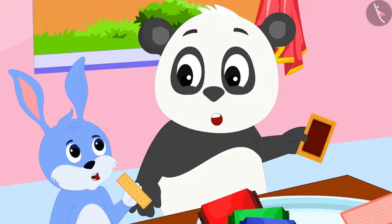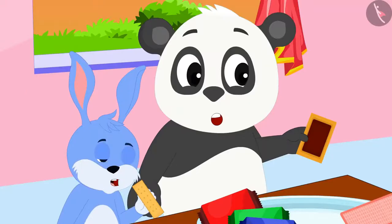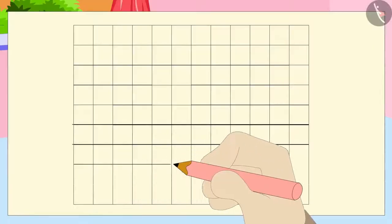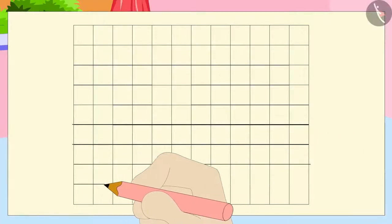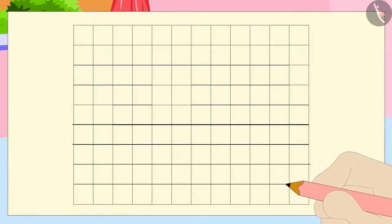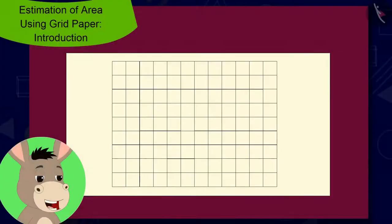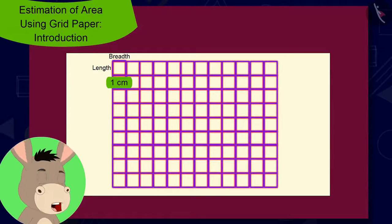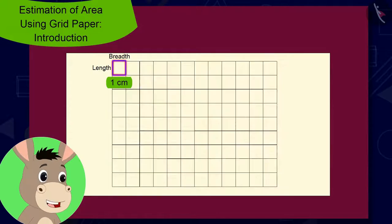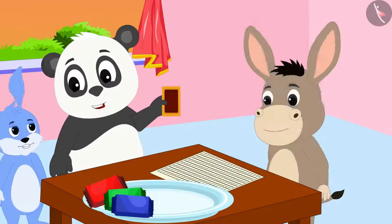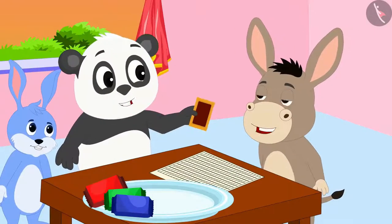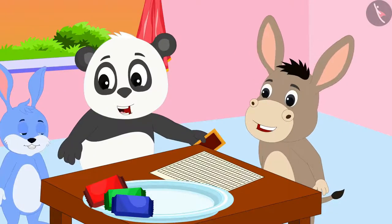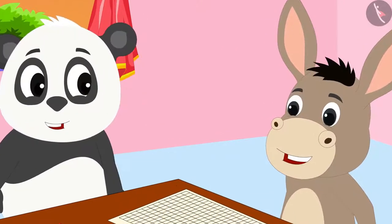Bunni and Golu could not understand anything. Then Bhoola made equal sized squares on a paper. 'A paper made of equal sized squares like these is called a grid paper,' said Bhoola. 'But Bhoola, how can we use this to find out the biggest biscuit?' Golu asked.